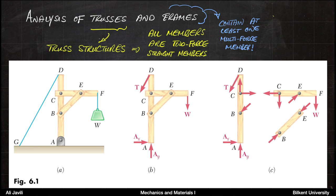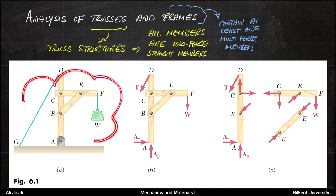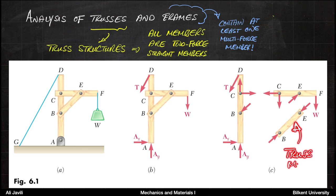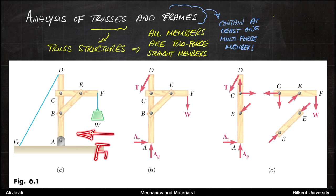In contrast to trusses, we can also think of frames. The fundamental difference between frames and trusses is that frames contain at least one member that is not a two-force member — they contain at least one multi-force member. For example, members AD or CF are not two-force members, and for that reason the structure shown is a frame, not a truss.